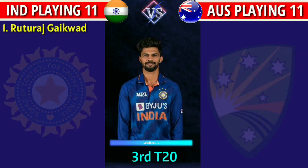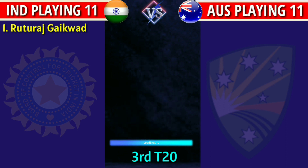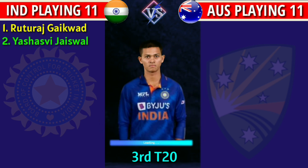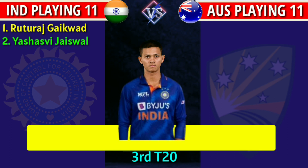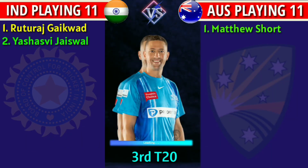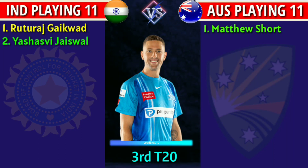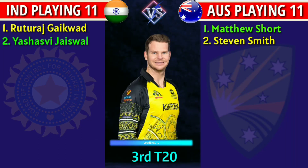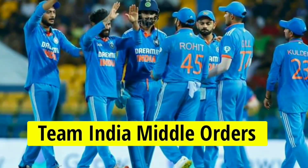Team India openers: 1. Ruturaj Gaikwad, right-handed batsman. 2. Yashasvi Jaiswal, left-handed batsman. Australia team openers: 1. Matthew Short, right-handed batsman. 2. Steven Smith, right-handed batsman.